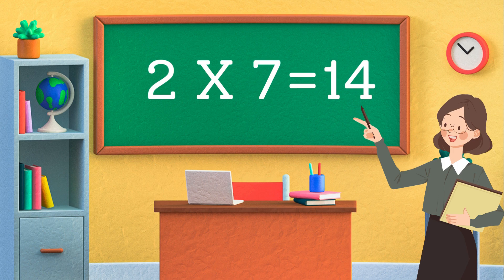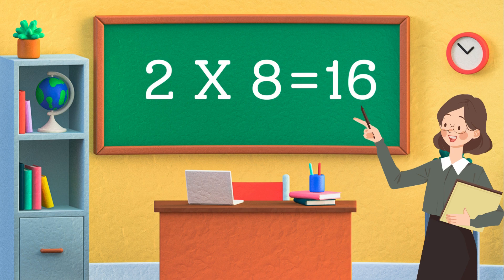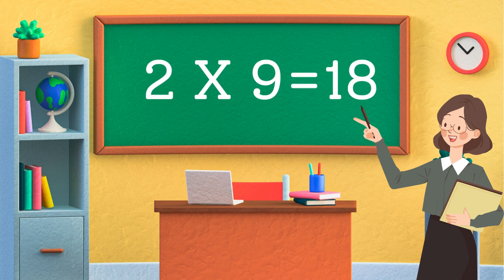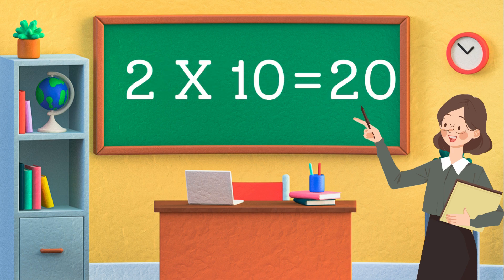Two sevens are fourteen. Two eights are sixteen. Two nines are eighteen. Two tens are twenty.